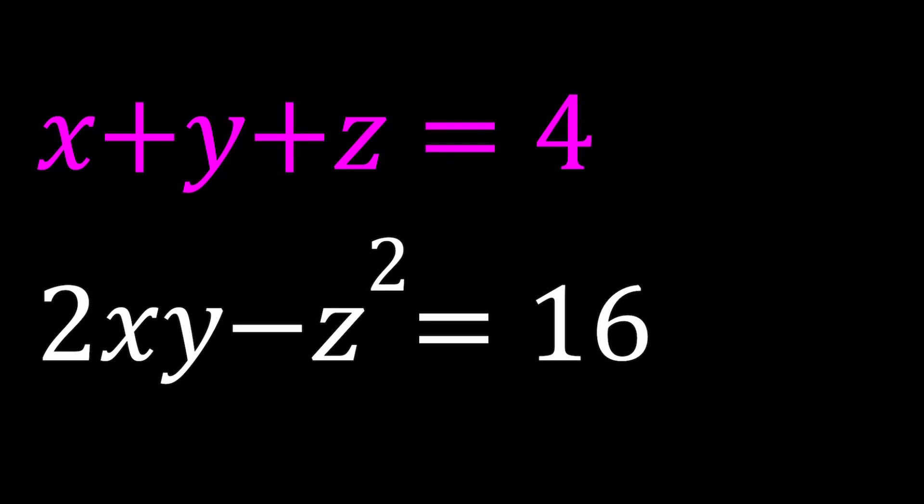We have this polynomial system: x plus y plus z equals 4, and 2xy minus z squared equals 16. We're going to solve this system for x, y, and z. I'm also going to show you a graph at the end which explains what's going on with these three variables.